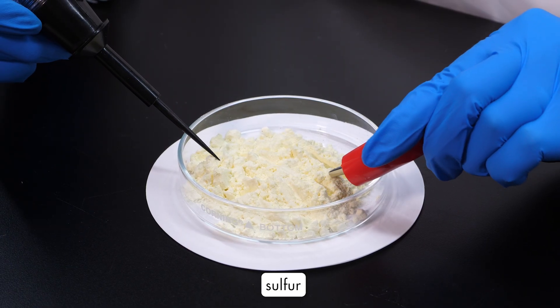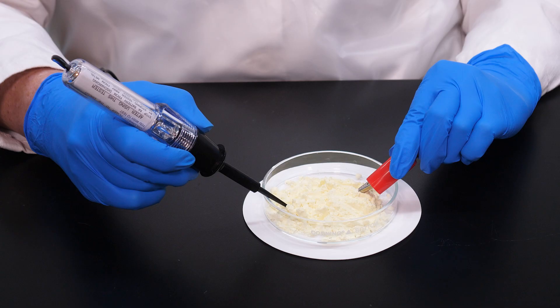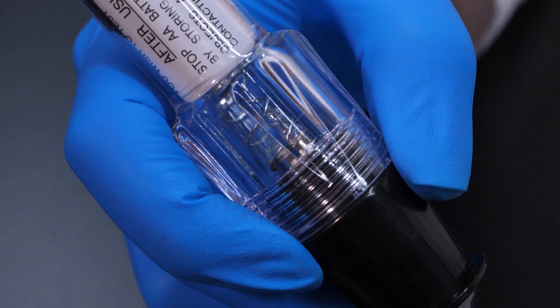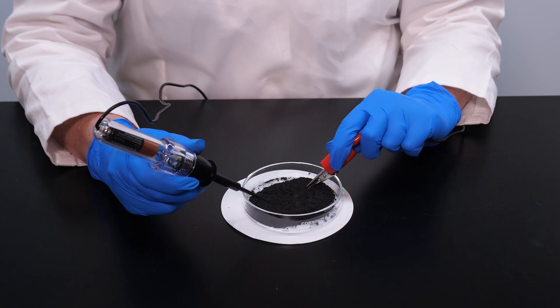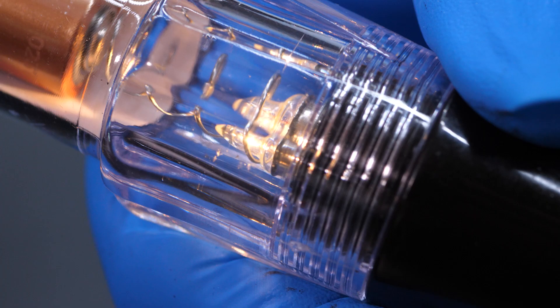Most nonmetals are poor conductors of electricity. If a substance conducts electricity, the light on this continuity tester will come on. As you can see, sulfur does not conduct electricity. However, carbon is an exception. Graphite, a form of carbon, is a good conductor of electricity.